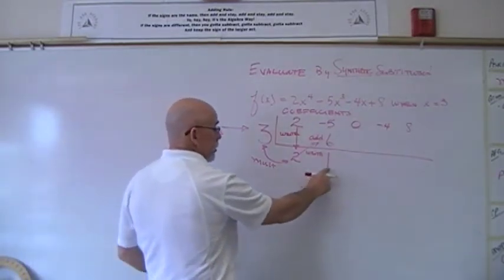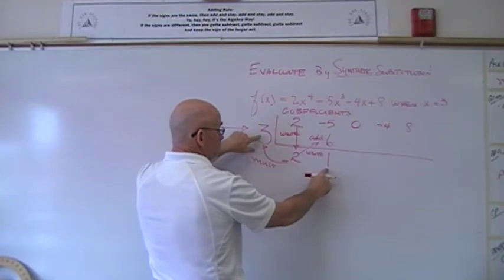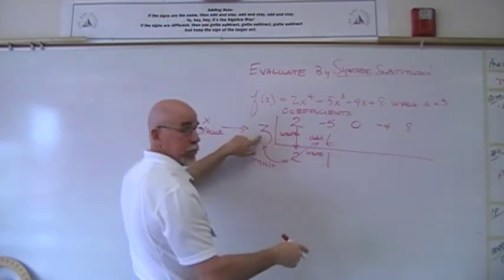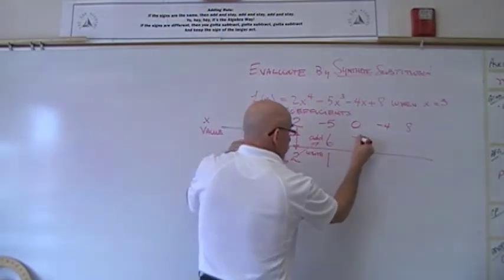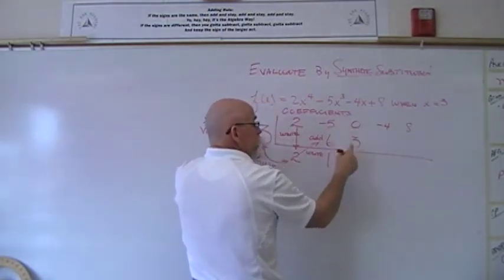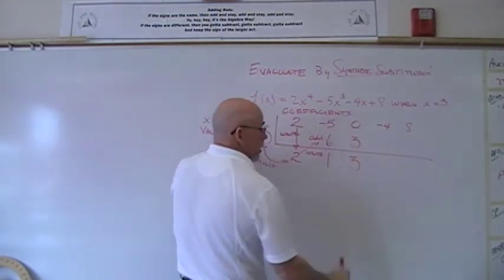We take this 1, just like we did 2 and 3, we take 1 and 3 and multiply them. We write that number right underneath that, and we add those two. Write it right underneath.